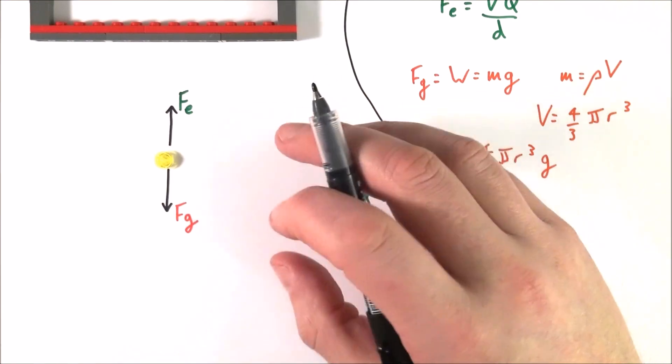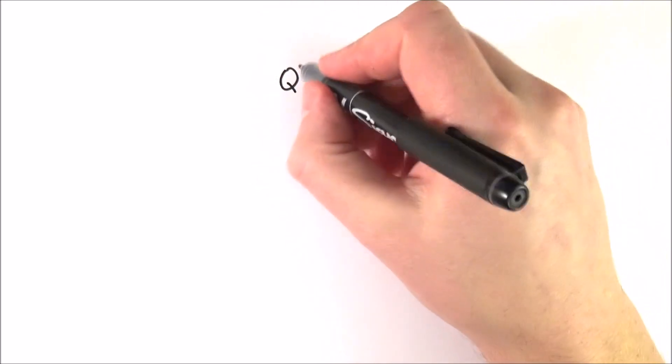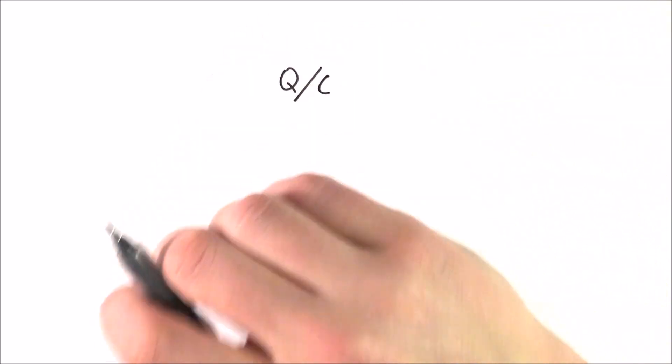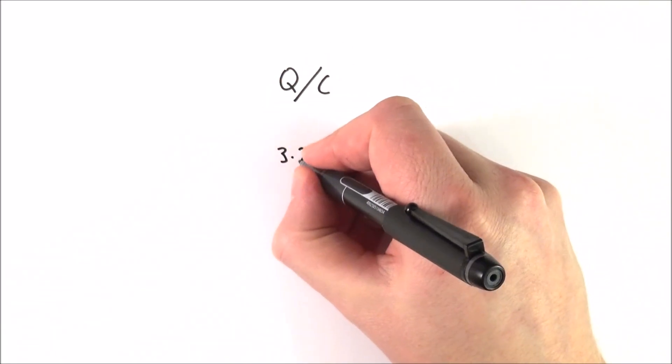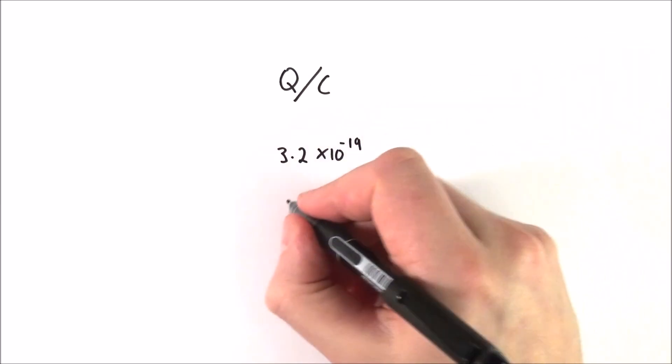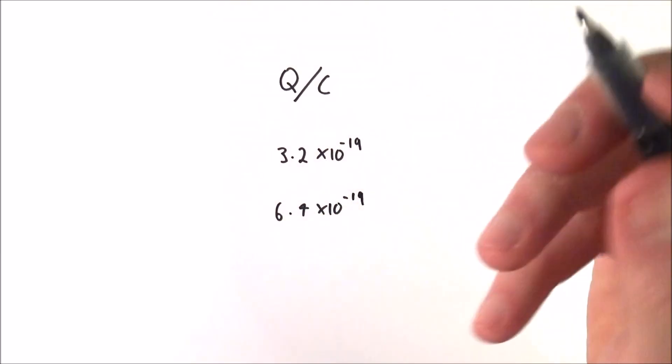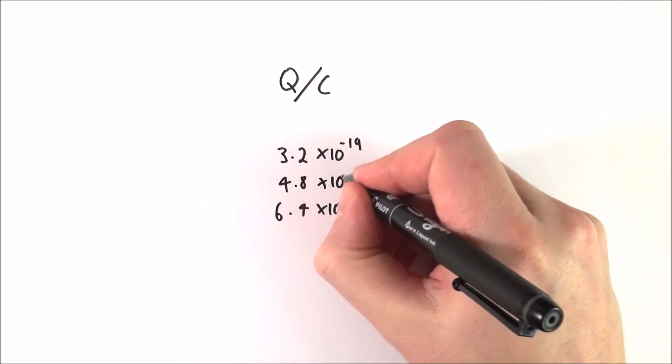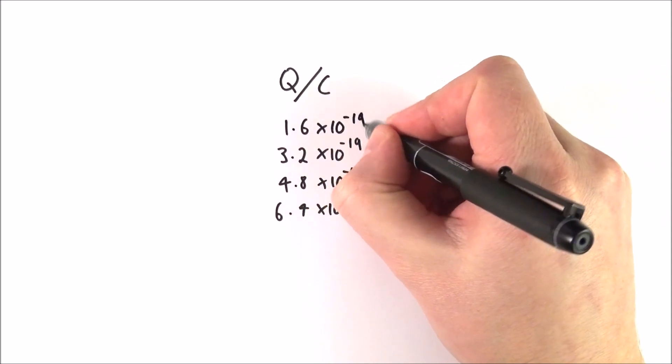So what Millikan found was that when he measured the charge on all of these oil droplets, and again, I'm going to give the values here in Coulombs, although he used a slightly different unit at the time, was he found that the charge in Coulombs was always a certain multiple of a number. And what he found was that there were droplets, some of them had a charge of 3.2 times 10 to the minus 19. Other ones might have had a value of 6.4 times 10 to the minus 19. Other ones had values of maybe 4.8. And also some of them had a very small value of 1.6 times 10 to the minus 19.